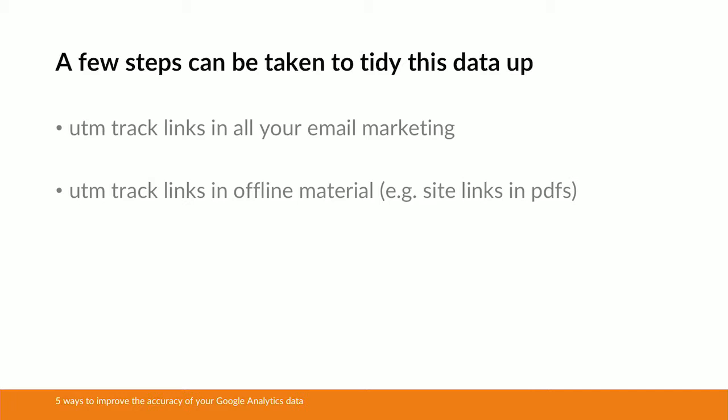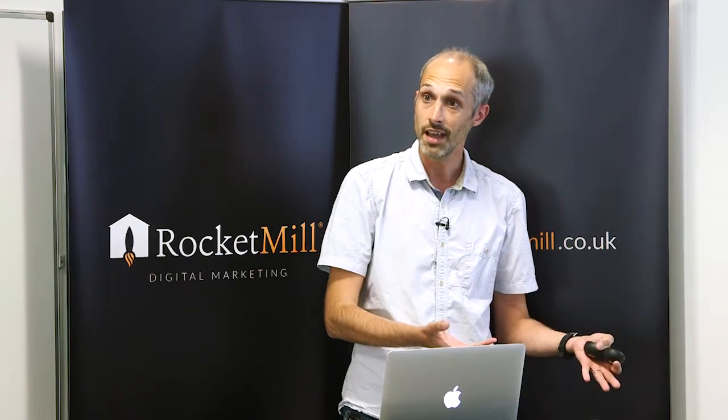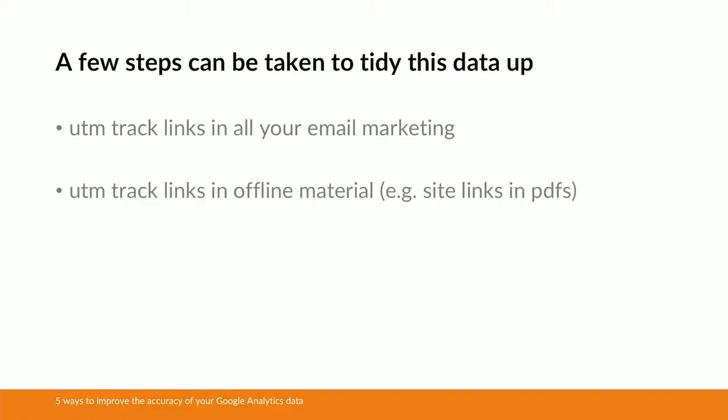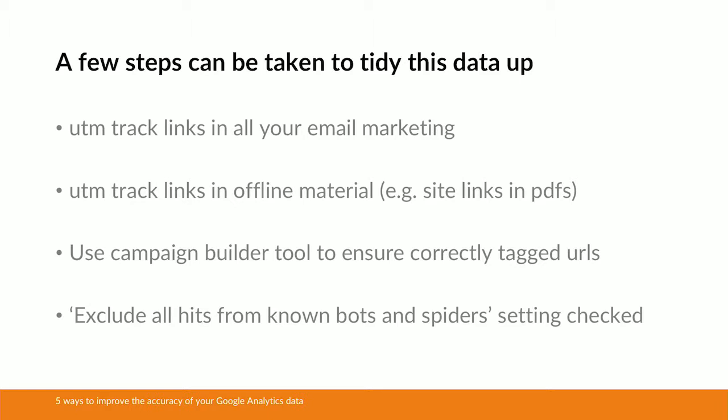A lot of this focuses around UTM tracking. Make sure you're UTM tracking links in all of your email marketing — you're pulling it out of the none traffic channel and into a separate medium where you can analyse it in a lot more detail. Similarly, UTM track links in any offline material you've got, such as PDF documents that have a link through to your website. Use the campaign builder tool to ensure UTM tracking is correctly tagged, which ensures you're using the right syntax and no rogue traffic will be coming into your none traffic channel.